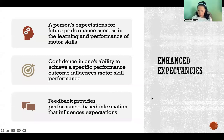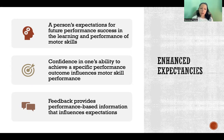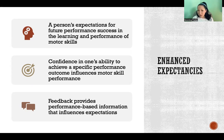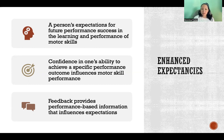The first aspect is enhanced expectancies, referring to a person's expectations for future performance success in the learning and performance of motor skills. That could be related to past experience — past successes or lack thereof — or confidence in their ability based on performing other related motor skills. It can also be related to feedback they're receiving during practice or competition. Anything that affects a person's expectation of their future performance is really important in both the learning and performance of that skill.